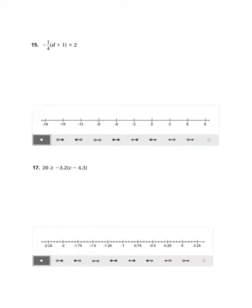Your next few problems have some distributive property to do. Number 15, I need to distribute my negative 1 fourth to each term inside the parentheses. So I have negative 1 fourth d plus negative 1 fourth is less than 2. I'm going to go ahead and add 1 fourth to both sides. And now I have negative 1 fourth d is less than,